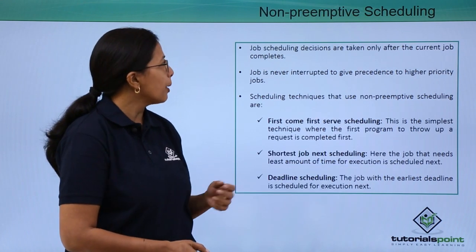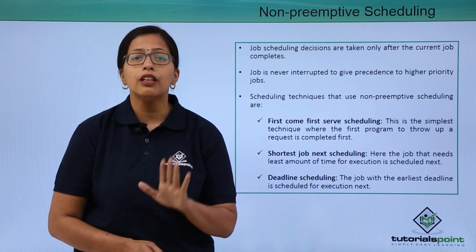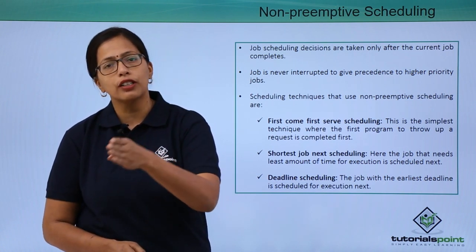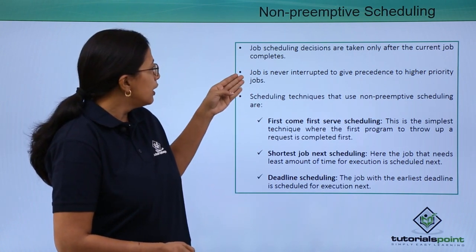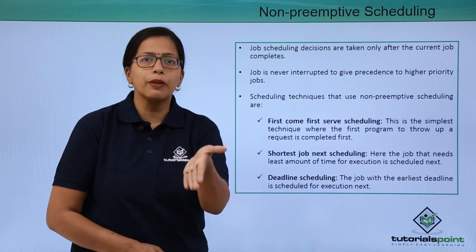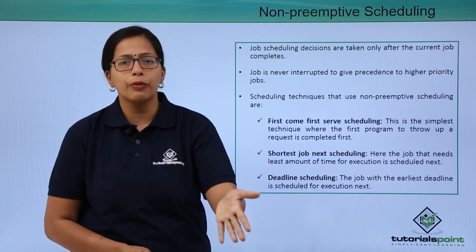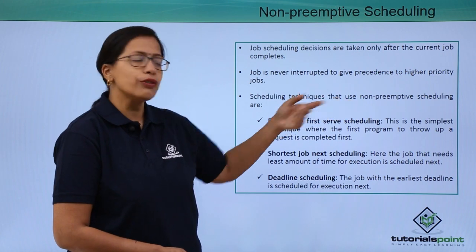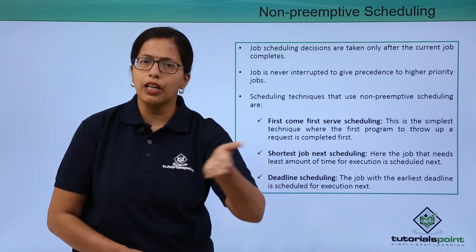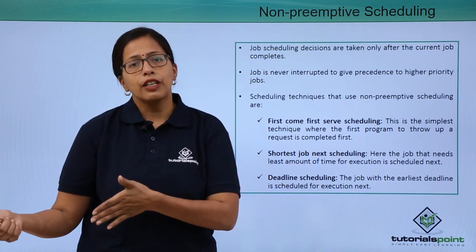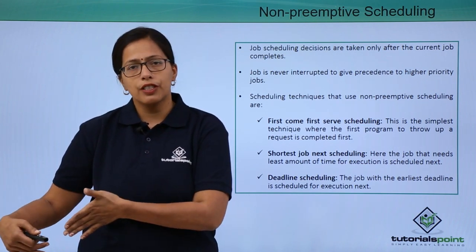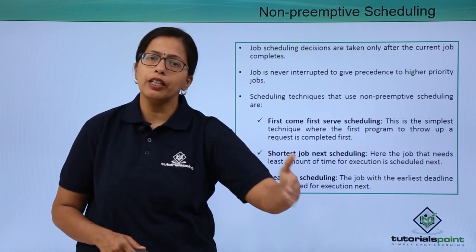Let's now move on to non-preemptive scheduling. In non-preemptive scheduling, the operating system has to wait till the current job is over before looking for the next job. This means a job can never be interrupted, whereas in preemptive scheduling, a job can be interrupted if a higher priority job comes in. There are three ways of doing this. First come first serve scheduling — the simplest: whoever sends a request first gets their job done first, and later requests are handled later.